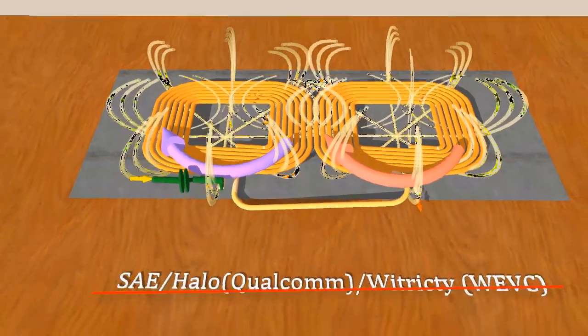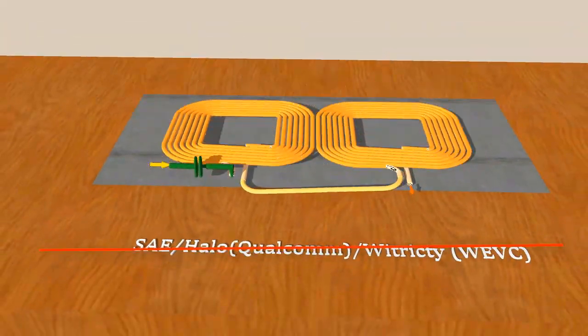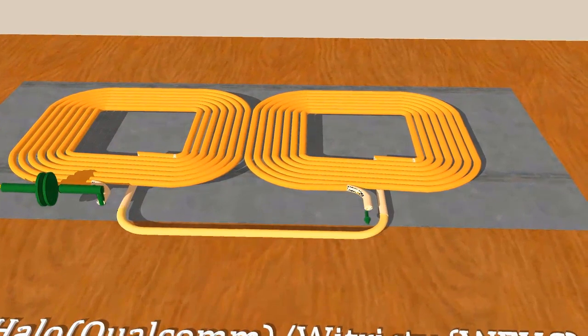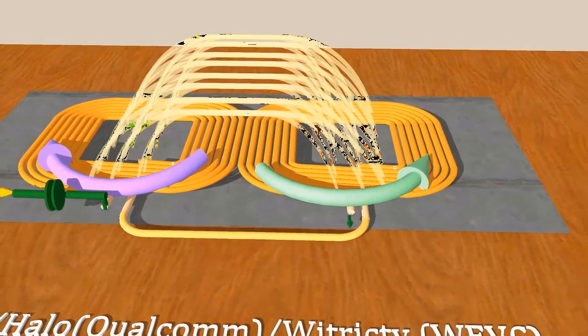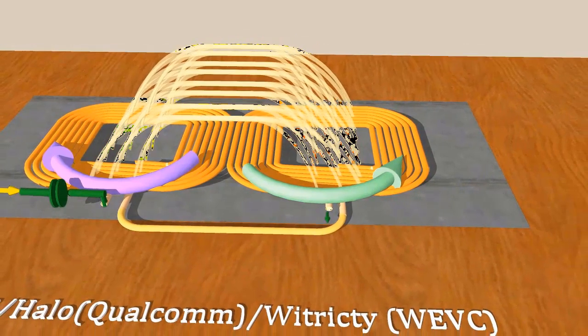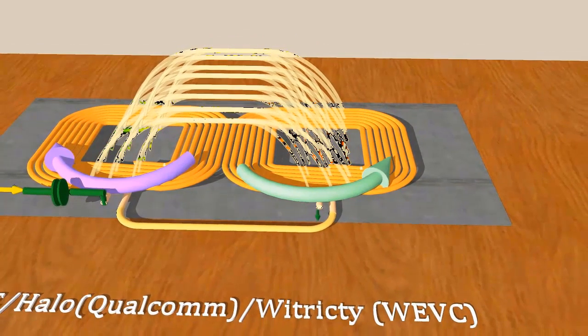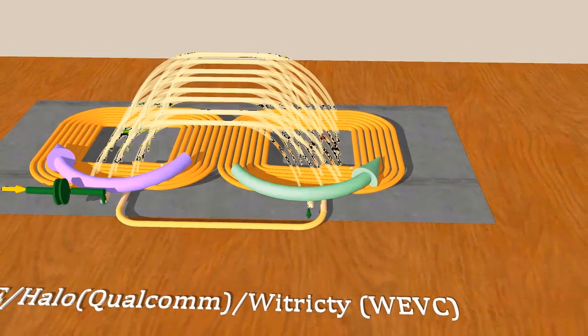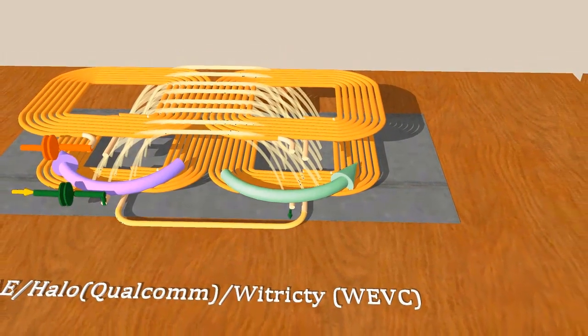Halo Qualcomm was on the right track because they realized putting two coils pointing in the same direction is a big mistake. How about putting them in opposite directions? That's what Halo Qualcomm did with the Double D coil, well known in metal detectors, which produces horizontal flux that's very convenient.